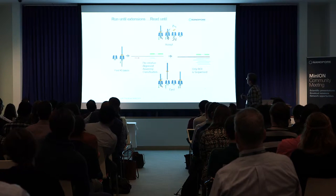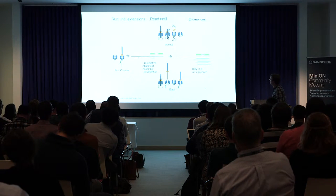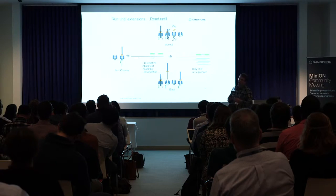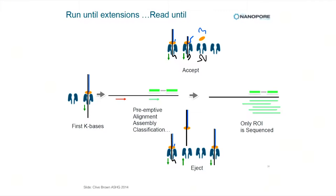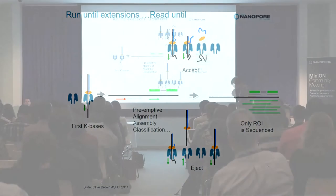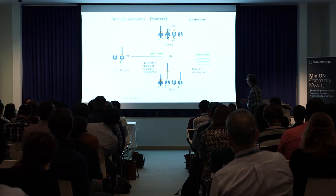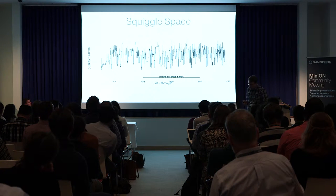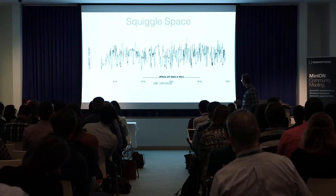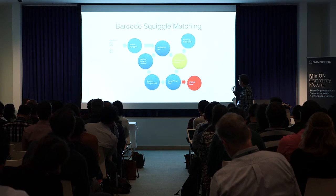Now I want to talk about something else that Nanopore introduced. Clive spoke about this in 2014 — this idea about Read Until: being able to look at reads as they actually pass through the nanopore, and then do something with them — choose whether to sequence them or not. I thought this was an absolutely astonishing idea, amazing that we might be able to implement it. In order to do that, you have to look at squiggles, because you're not getting base-called data, you're getting individual squiggles coming back.